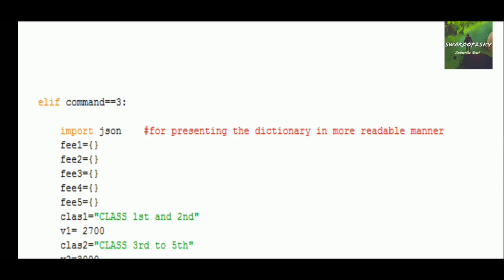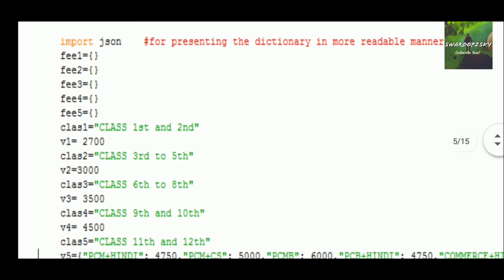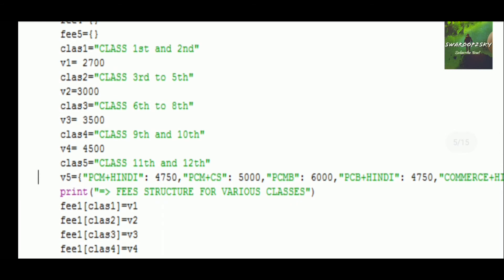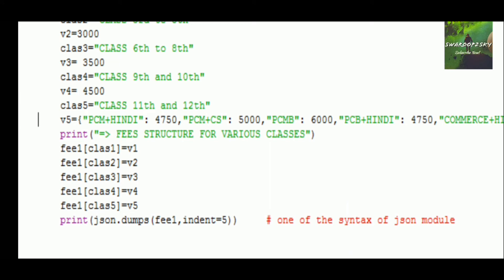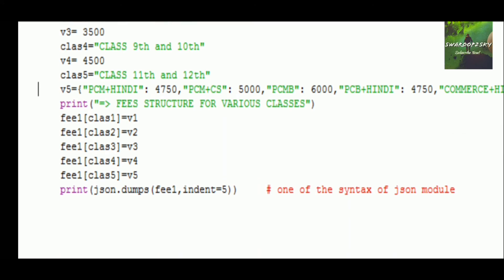Command 3 uses import json. JSON is a pretty-printing tool for presenting dictionaries in a readable manner, because dictionaries store their data in an unordered way and are not quite good in readable form. We are using pretty printing, which is covered in the Class 11 IP book. There are five empty dictionaries with values set for class one through class five, including subject-wise values for class five. The last line is: print(json.dumps(fees, indent=5)) — this is the syntax of the json module where indent controls the number of spaces.